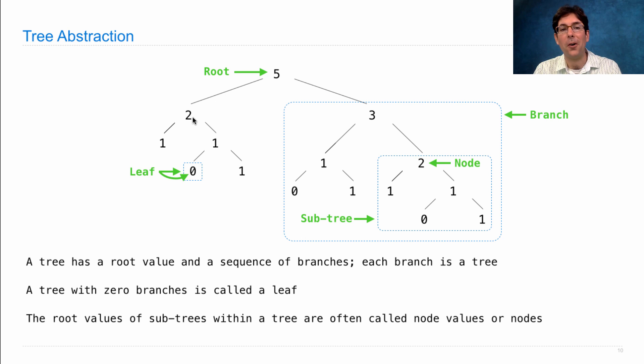So if we wanted to enumerate all of the nodes, there would be 1, 2, 3, 4, 5, 6, 7, 8, 9, 10, 11, 12, 13, 14, 15 nodes.